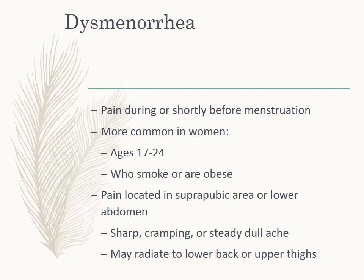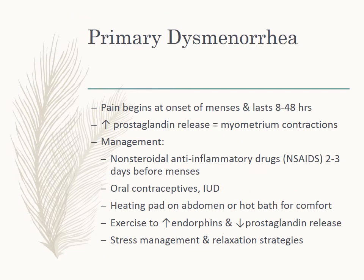Range and severity of symptoms vary from woman to woman and cycle to cycle. With primary dysmenorrhea, pain begins at the onset and lasts for 8 to 48 hours. There is high increased prostaglandin release causing myometrium contractions. Management includes nonsteroidal anti-inflammatory drugs — NSAIDs — two to three days before menses, oral contraceptives and IUDs, heating pad on the abdomen, hot bath for comfort, and exercise because it increases endorphins and decreases prostaglandin release. We also want stress management and relaxation strategies.